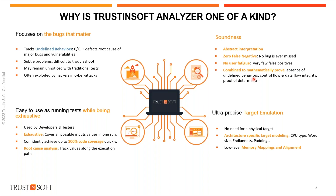It's not only one proof — you also get proof of control flow and data flow integrity, which is paramount for cybersecurity and for safety. If you are familiar with the ISO 26262 standard, it states that you should have no hidden control flow and no hidden data flow. This integrity of control flow and data flow is proven by our analyzer.